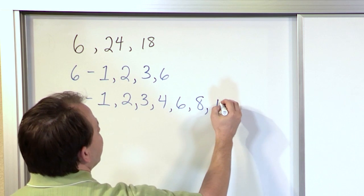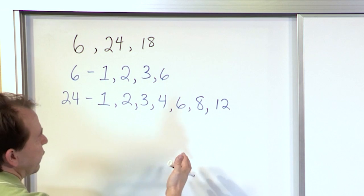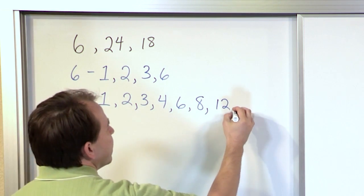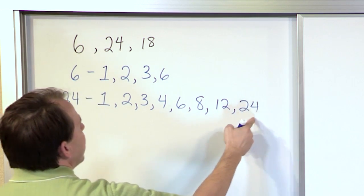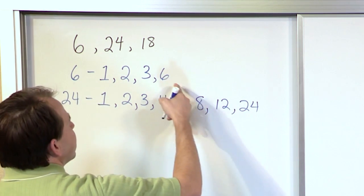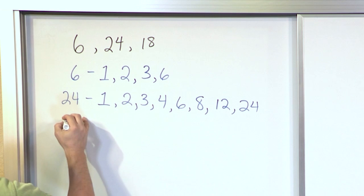The number 6 is a factor because 6 times 4 is 24. The number 7 is not a factor, but the number 8 is a factor because 8 times 3 is 24. 9, 10, and 11 are not factors. But the number 12 is a factor because 12 times 2 is 24. Continuing through 13, 14, 15 — none of those divide in. The last factor is always the number itself, so the factors of 24 are: 1, 2, 3, 4, 6, 8, 12, and 24.